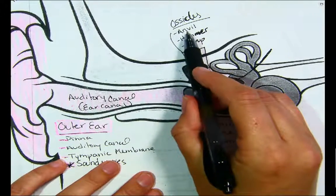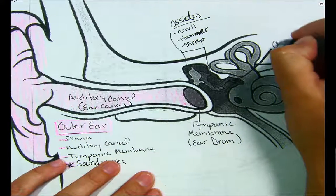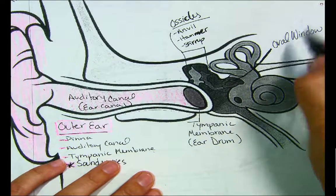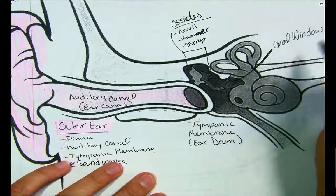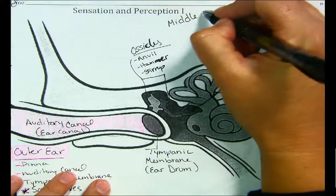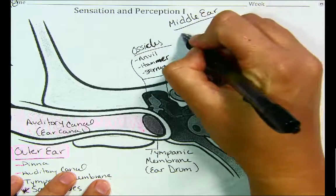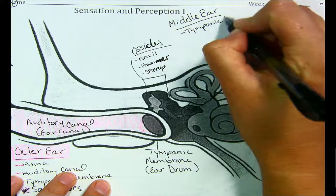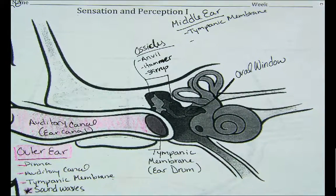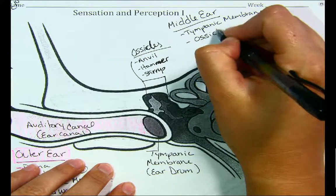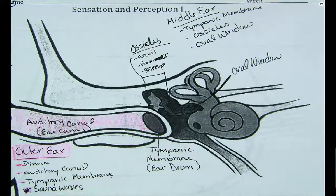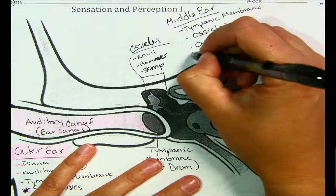So you have your tympanic membrane, then your ossicles — anvil, hammer, stirrup — and then you have the oval window. The oval window is called that because it's oval, and it's the connection between your middle ear and your inner ear. Your middle ear is made up of the tympanic membrane, the ossicles, and the oval window, and this all functions off of physical creation of sound.